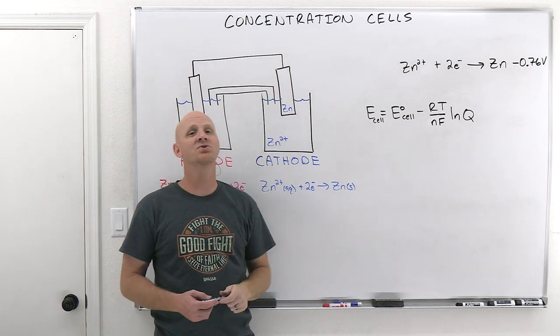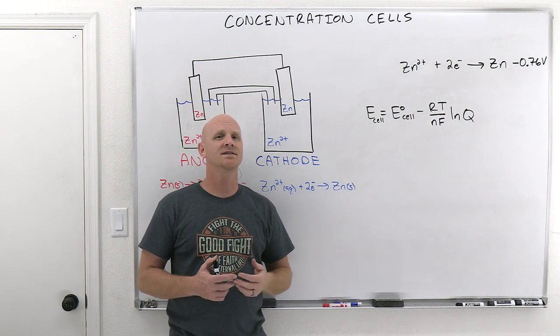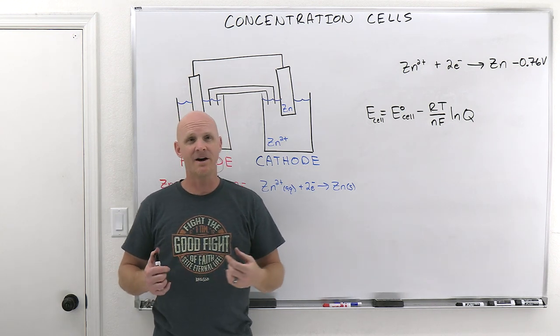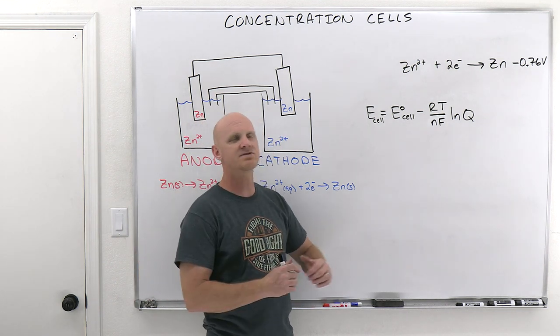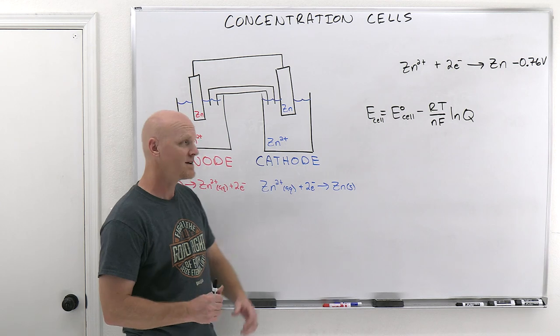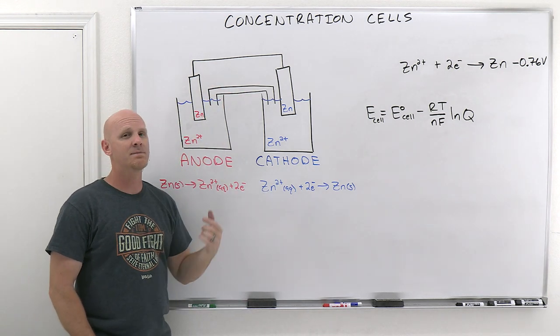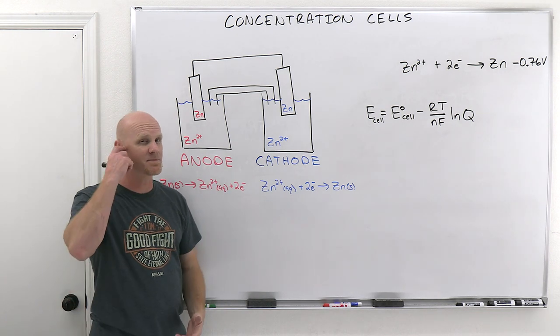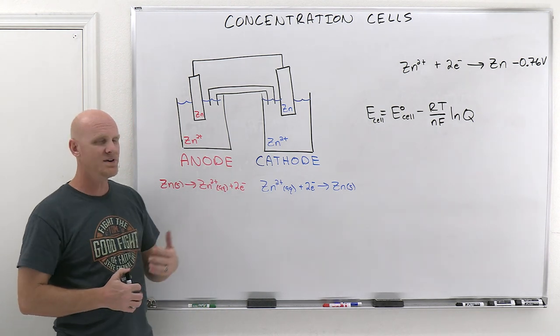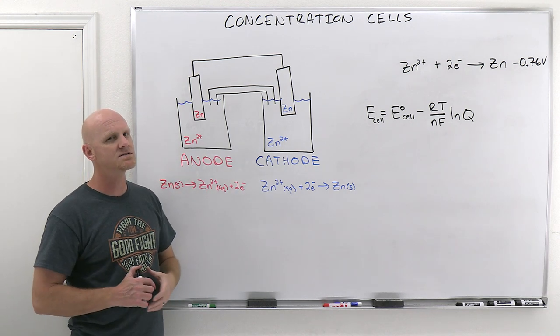All right, so concentration cells. These are a special type of galvanic cell, and they're a little bit unique and usually something that professors will spend a very minute amount of time on, and students often just kind of fall asleep in class for three seconds and miss it. So we're going to go through it real quick, but it's a special type of galvanic cell. So first off, that means that these are going to be spontaneous reactions. These can function as batteries. But what's going to be unique about them is that your anode and your cathode are going to look really, really similar here.